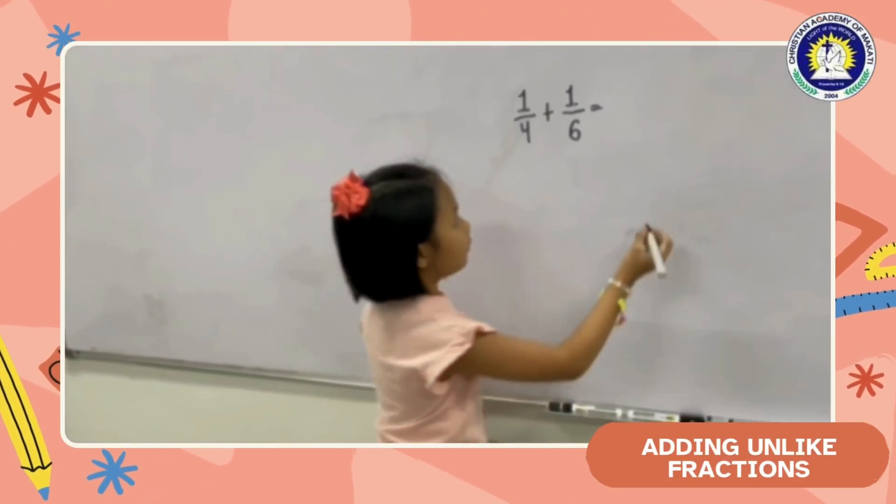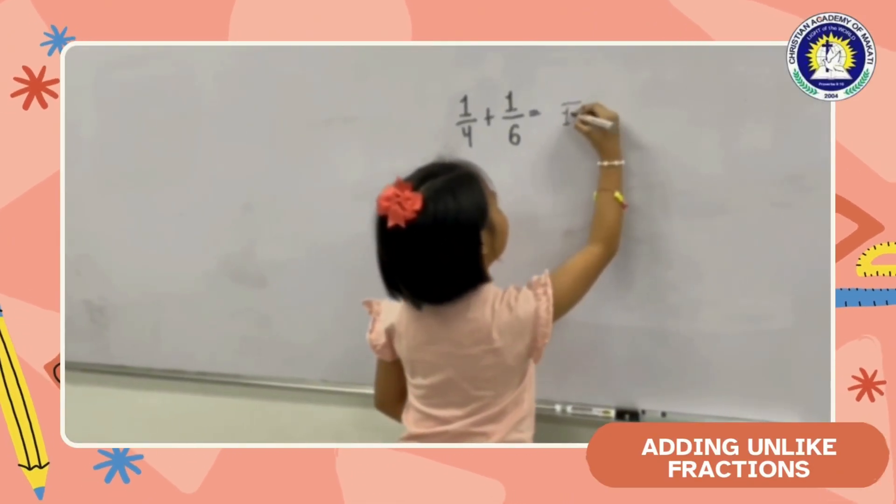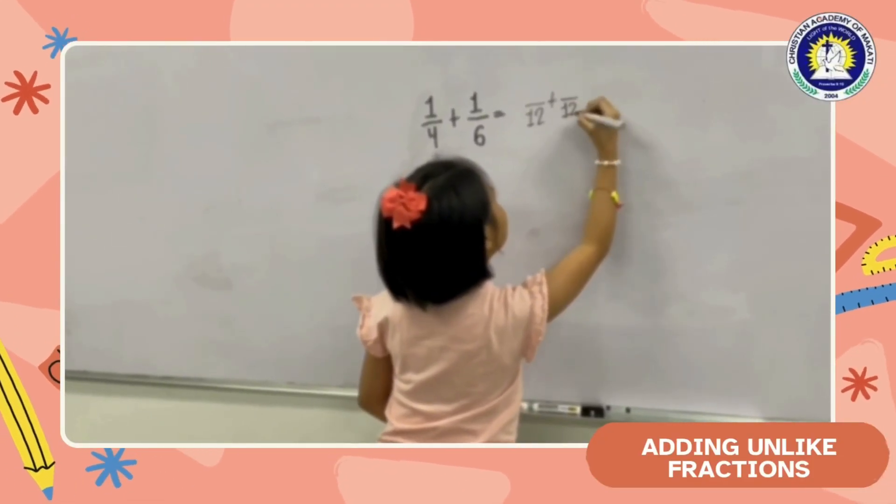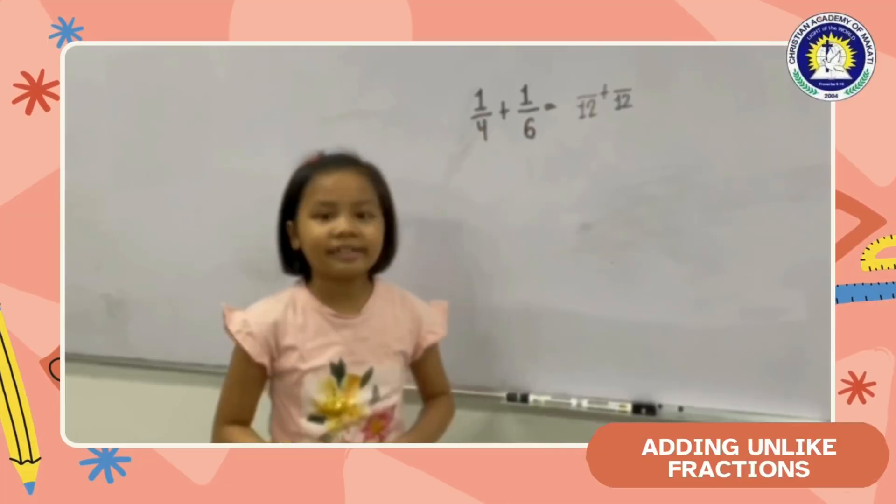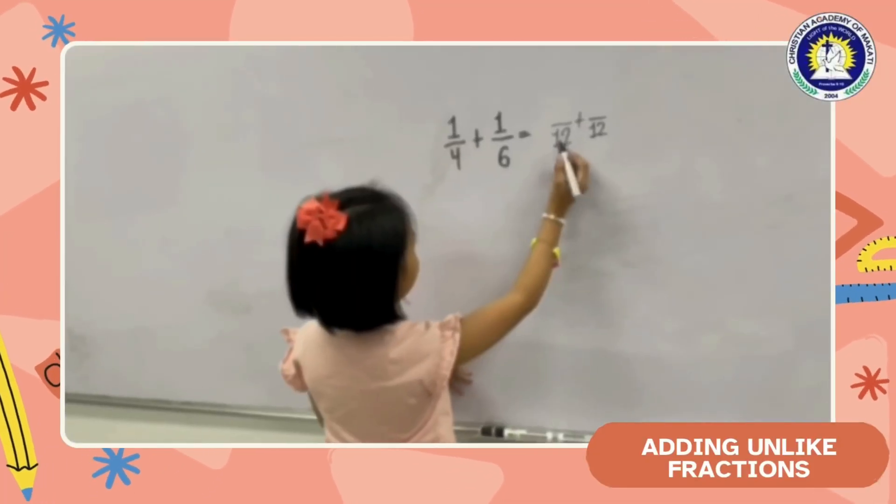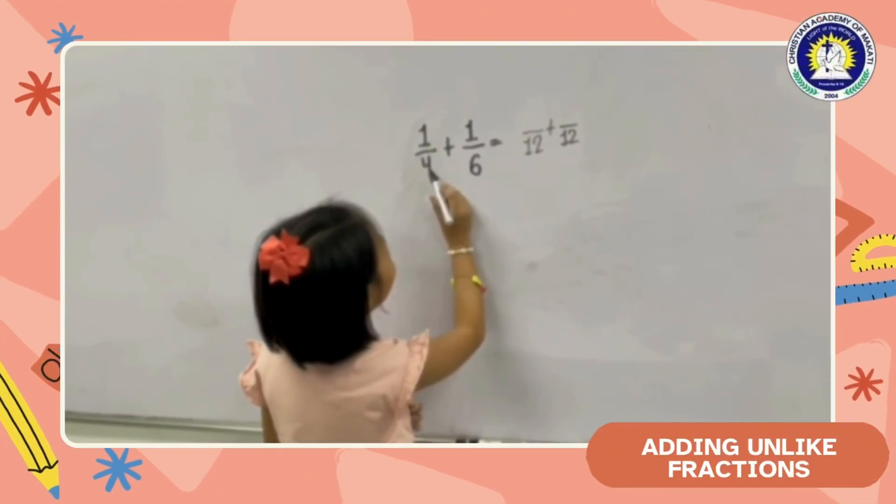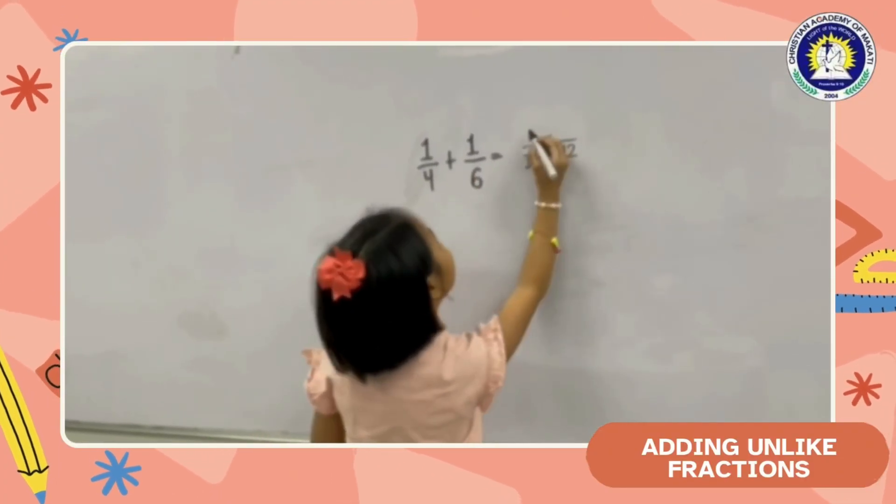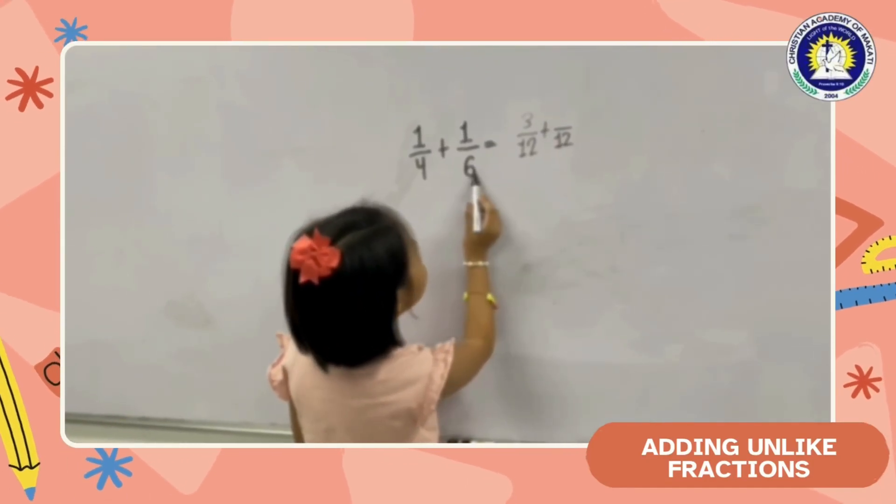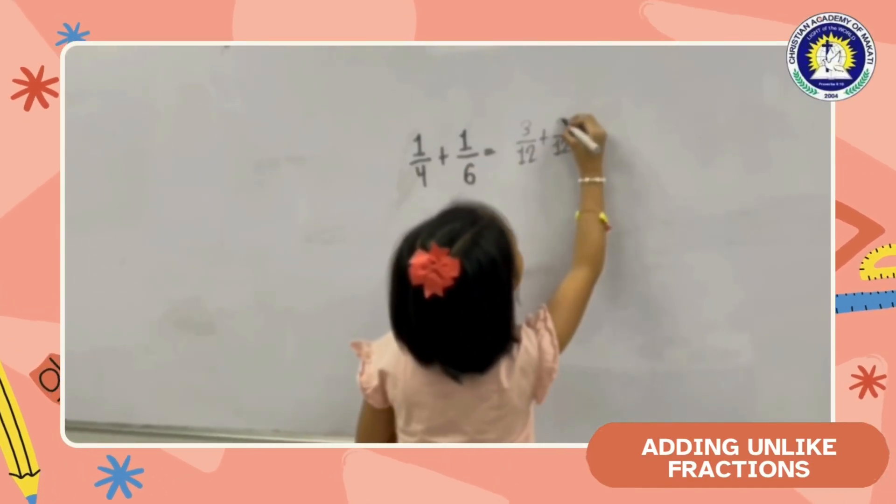So we have to write 12 as our denominator. The next step we have to do is find the numerator. 12 divided by 4 is 3, and 3 times 1 is 3. Now 12 divided by 6 is 2, times 1 is 2.